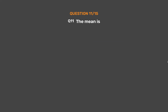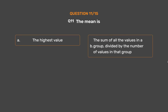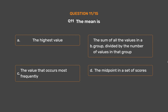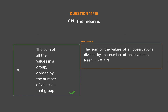Question number 11. The mean is: Option A: The highest value. Option B: The sum of all the values in a group, divided by the number of values in that group. Option C: The value that occurs most frequently. Option D: The midpoint in a set of scores. The correct answer is Option B: The sum of all the values in a group, divided by the number of values in that group — i.e., the sum of all observations divided by the number of observations. Mean equals ΣX / N.